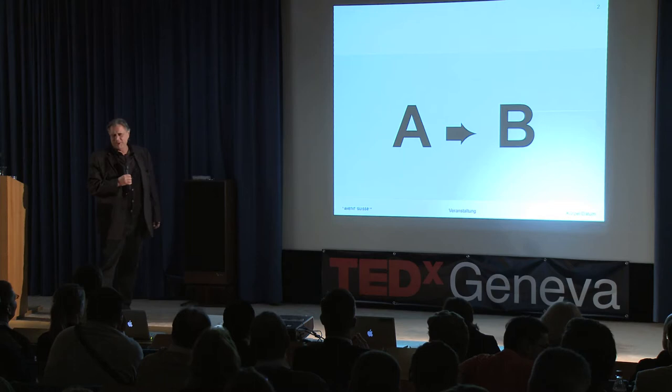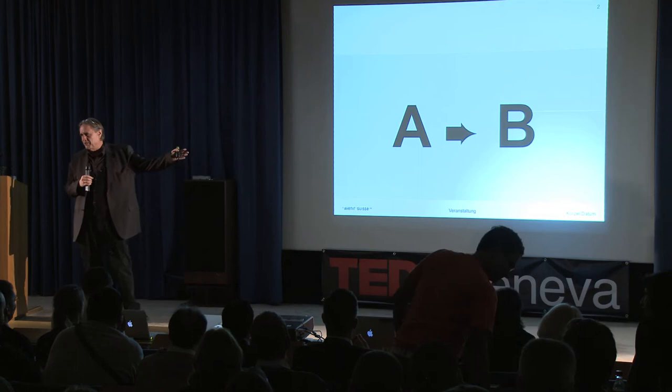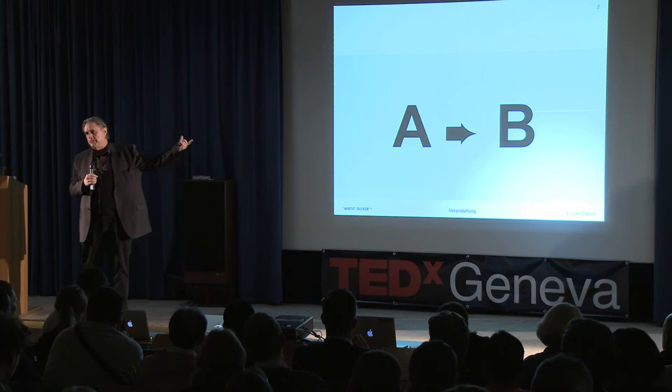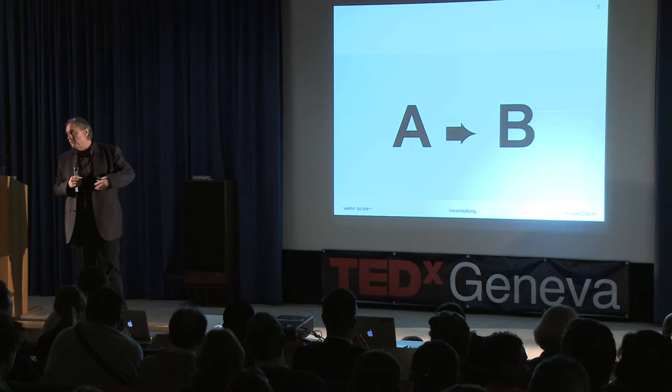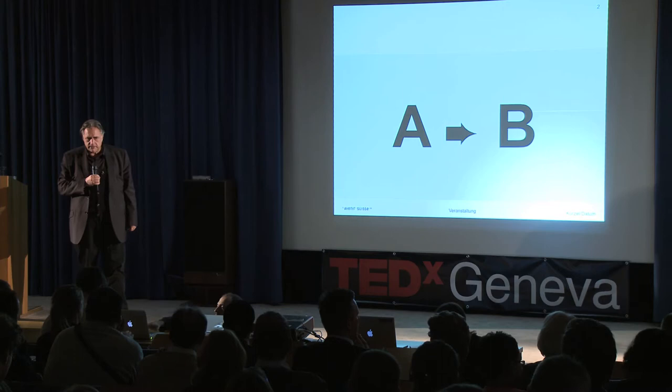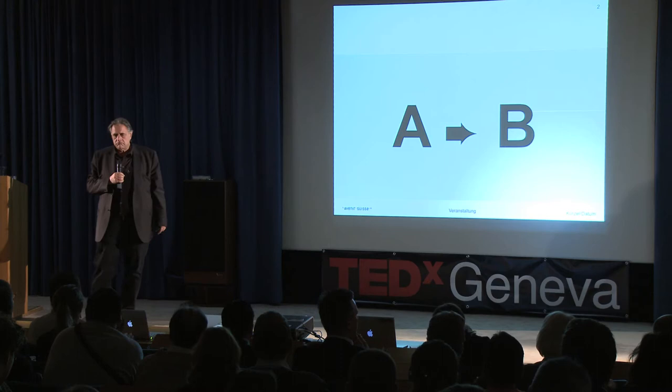It looks a little bit simple, but A tried to talk with B, and there are several ways to do so. A can go to B if they are not in the same city and they talk together. Or A can send a messenger to B, and the messenger will talk to B. Or A can send a message, a letter, whatever, between A and B.